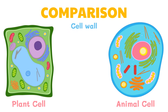Both plant and animal cells have a cell membrane, but only plant cells have a cell wall. In plant cells, the cell wall surrounds the cell membrane, giving the plant cell its box-like shape. This also allows plants to remain strong and stand upright even if they grow to great heights.